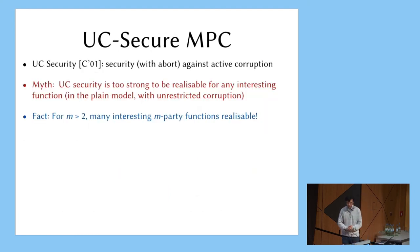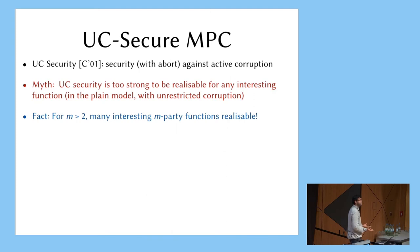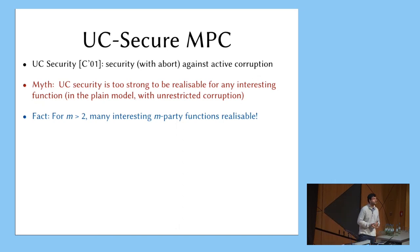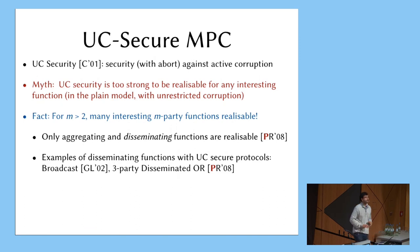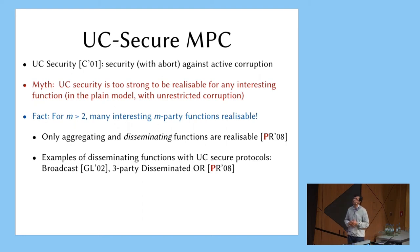That is all about passive security. Let me spend one slide on UC security. There's a perception that if you do not have any setups there's very little you can do — but that is for two parties. If you go beyond two parties, there are interesting functions you can do. There are some limitations: you can only do aggregating functions like we are talking about, or dual disseminating functions where one party has input and all the other parties have output. Broadcast with abort is possible — there is a UC-secure protocol observed by Golder and Lindell — and there are also some other special cases for disseminating functions.